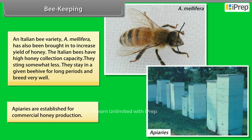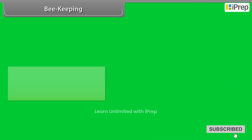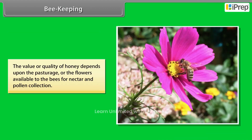Apiaries are established for commercial honey production. The value or quality of honey depends on the pasturage or the flowers available to the bees for nectar and pollen collection.